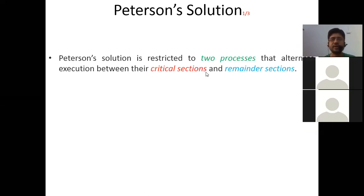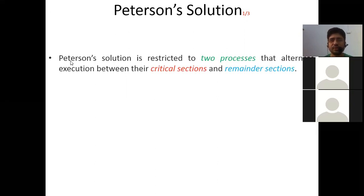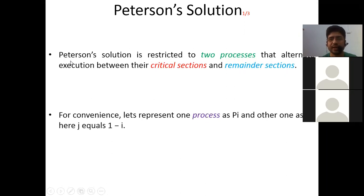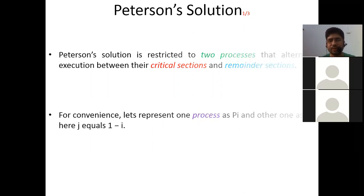So what is Peterson's solution? This solution is for only two processes in which we have some concurrent processes that are running. For this, we have taken PI and PJ processes, where I is 0 and J is 1. So you can call them P0 and P1 processes.